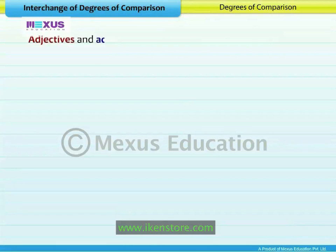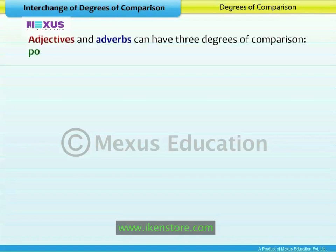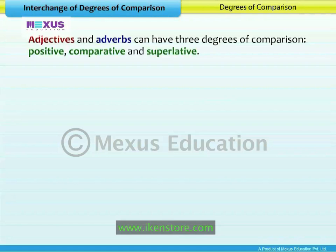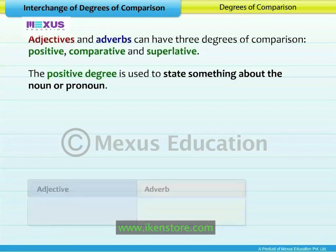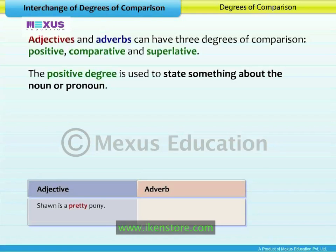Adjectives and adverbs can have three degrees of comparison: positive, comparative, and superlative. The positive degree is used to state something about the noun or pronoun. Take a look at the table. For example: Sean is a pretty pony. Sheila draws beautifully.